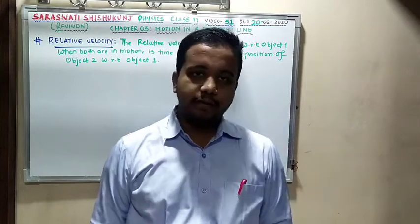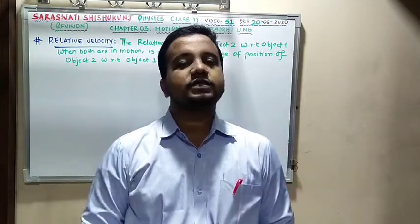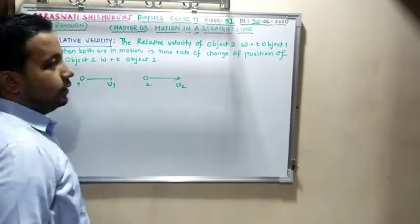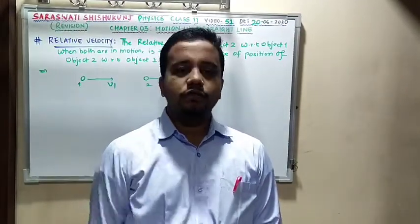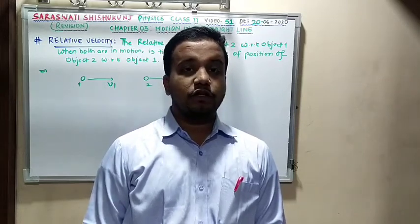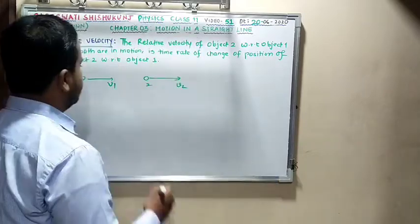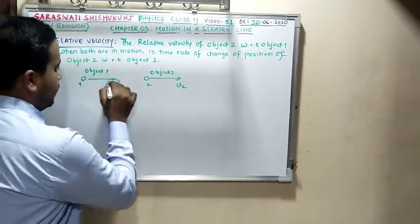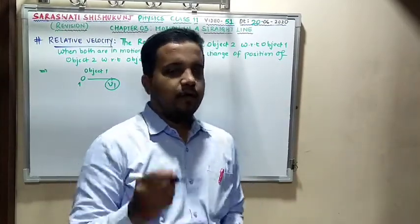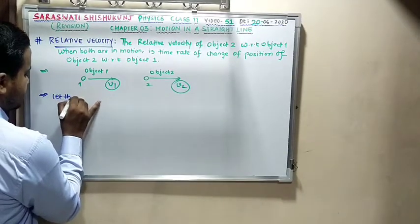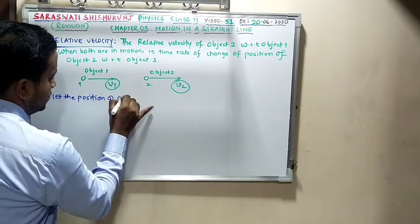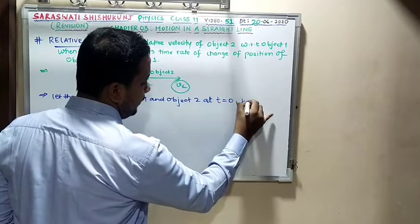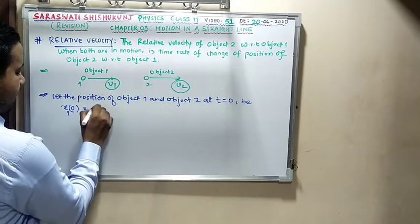Now I will prove how this relative velocity formula is derived. If object 1 is moving with constant velocity v1 and object 2 is moving with constant velocity v2, and both are moving in the same direction with constant velocities v1 and v2 respectively, this is object 1 and this is object 2.